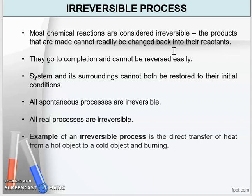An example of an irreversible process is the direct transfer of heat from a hot object to a cold object. Another example is burning — when you burn a paper, you get ash, and we cannot turn the ash back into paper. This is what we call the irreversible or real process, where the products cannot readily be changed back into their reactants.